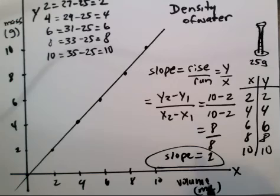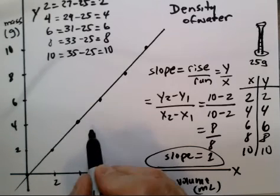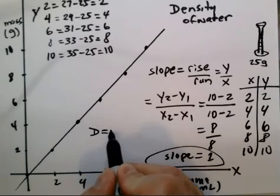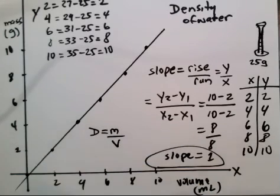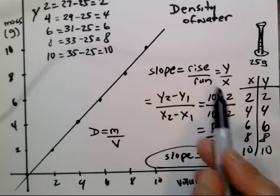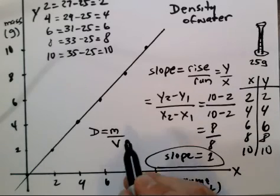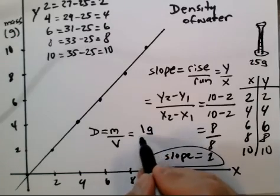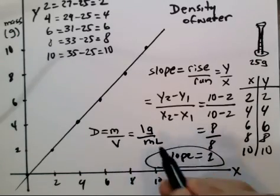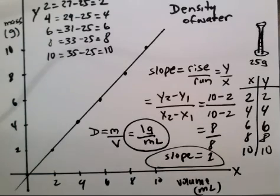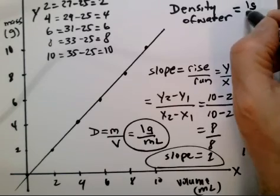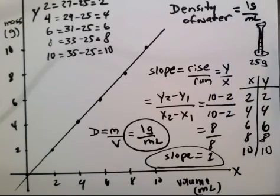Basically what we're doing is we're using this graph to determine the density of water. Density is equal to mass divided by volume. When we divide that information that we have on this page, we get a value of one gram per milliliter. That's what we report as the density of water equals one gram per milliliter. There you go, mates. Good job. Keep up the good work.